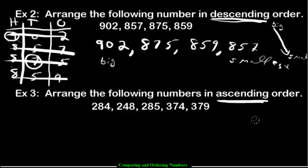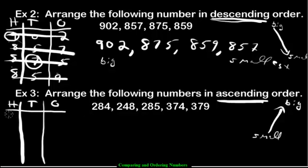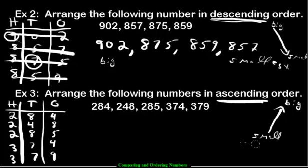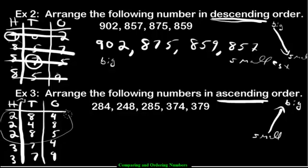The next question is ascending order — going up the mountain, starting with the small numbers first and ending with the biggest. We make our chart and throw in all the numbers. The rule for smallest: the number with the least amount of hundreds. But it's a tie, so we jump to the tens. The number with the least amount of tens is the smallest. Between these numbers the one with the least tens is four, so 248 is the smallest number.